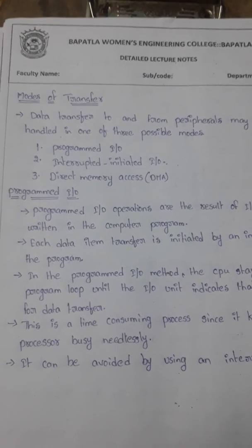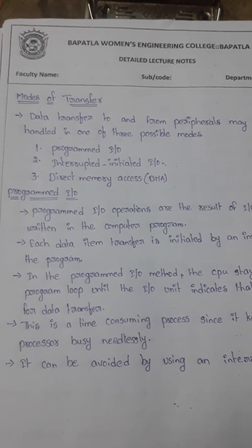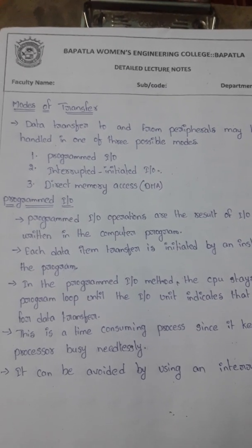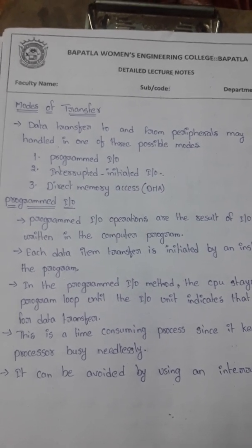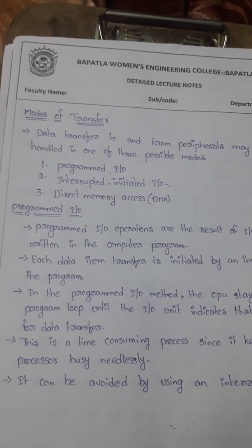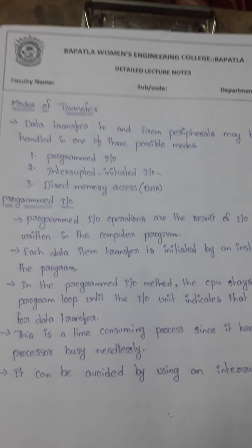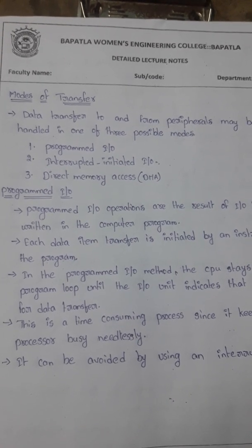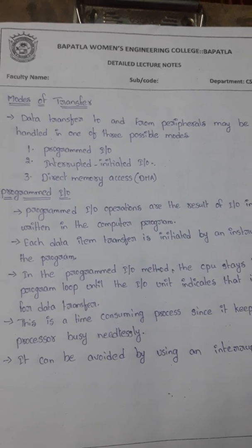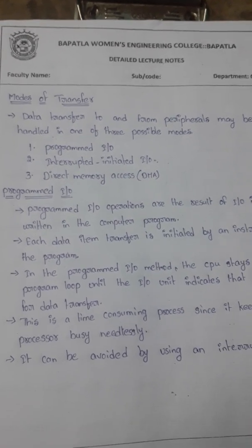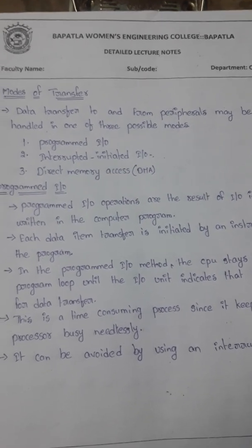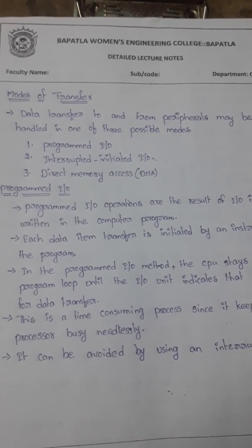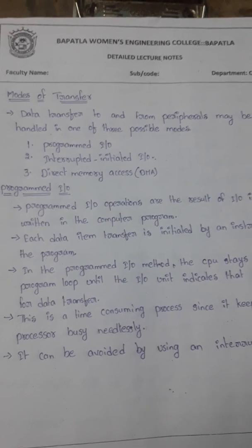Hello students, today I am going to discuss about modes of transfer. Binary information received from an external device is usually stored in the memory for later processing. Whatever information we are receiving from the I/O devices is stored in the CPU for computations. The data transfer to and from peripherals may be handled in one of three possible modes.